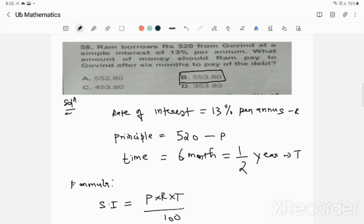In question 58, Ram borrows Rs.520 from Govind at a simple interest of 13% per annum. What amount of money should Ram pay Govind after 6 months to be out of debt?